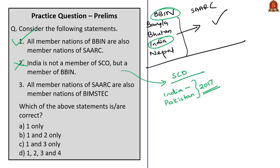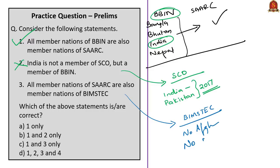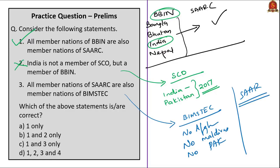The third statement: all member countries of SAARC are also member nations of BIMSTEC. However, Afghanistan, Pakistan, and Maldives are in SAARC but not in BIMSTEC. We cannot say all member nations of SAARC are also members of BIMSTEC. Statements two and three are wrong, so the correct answer is option A: one only.